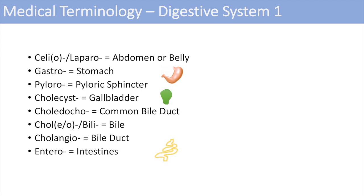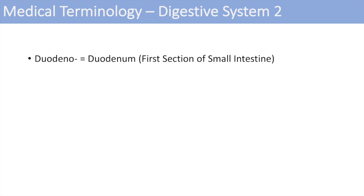Entero denotes the intestines — so enteritis or gastroenteritis, sometimes combining those two terms. The next one is pancreato for pancreas — pancreatitis is inflammation of the pancreas. Moving into the small intestines: the duodenum stands for the duodenum, the first section of the small intestine. You might have heard of a duodenectomy — a surgical removal of part of the duodenum.